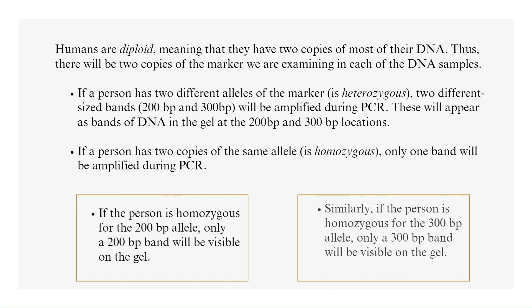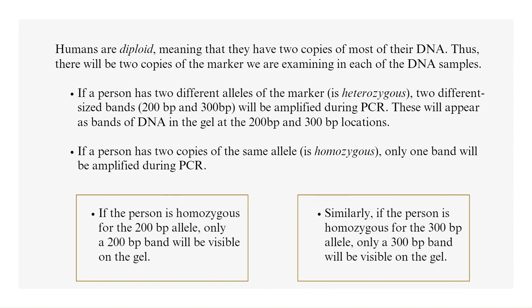Humans are diploid, meaning they have two copies of most of their DNA. Thus, there will be two copies of the marker we are examining in each DNA sample. If a person has two different alleles of the marker — is heterozygous — two different-sized bands, 200 base pair and 300 base pair, will be amplified during PCR. These will appear as bands of DNA in the gel at the 200 and 300 base pair locations. If a person has two copies of the same allele — is homozygous — only one band will be amplified. If homozygous for the 200 base pair allele, only a 200 base pair band will be visible; if homozygous for the 300 base pair allele, only a 300 base pair band will be visible on the gel.